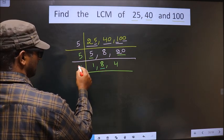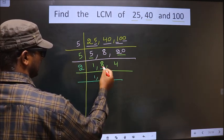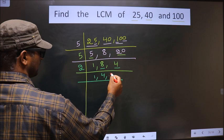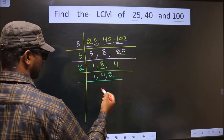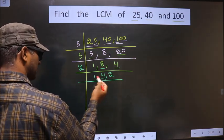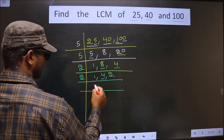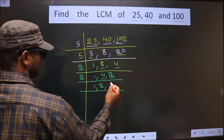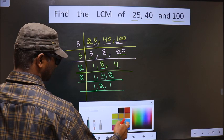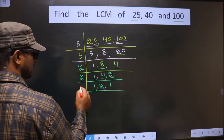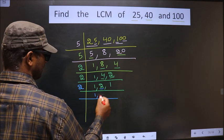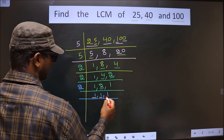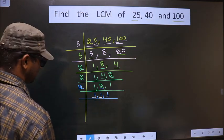Now we have 1, 8, and 4. Since 8 is an even number, we take 2 as our next divisor. 8 divided by 2 is 4 (since 2×4=8). 4 divided by 2 is 2 (since 2×2=4). We divide by 2 again: we get 1 in all three places, so we stop.